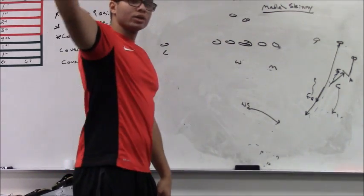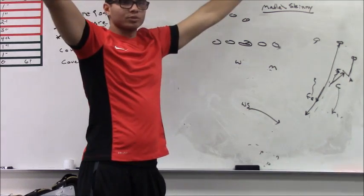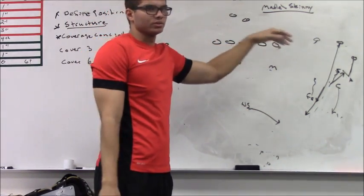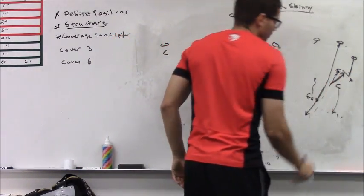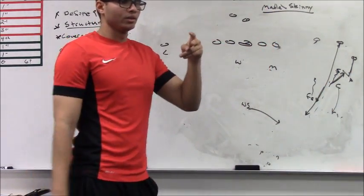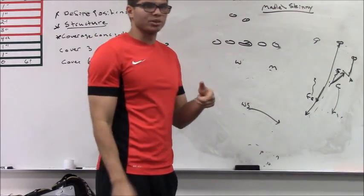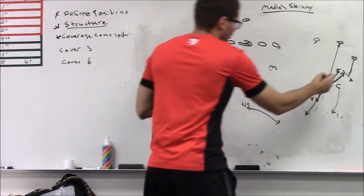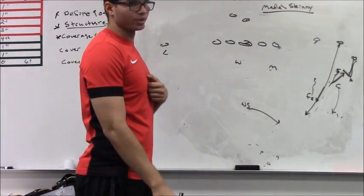Now, what do you want to give up in cover 3? Philosophically, the things that are to the farthest part of the field, to the flat, particularly to the field. And so, if you're okay with giving up this route, the hitch, the slant, the quick game by 1, then playing skinny is a good option. But if you want to have somebody in the flat for him on that quick game, then you want to be able to play straight Mabel.